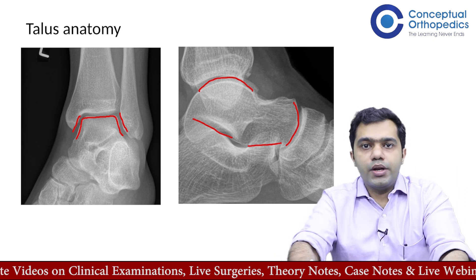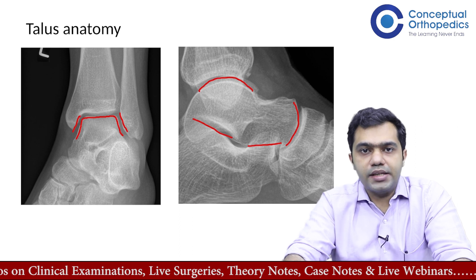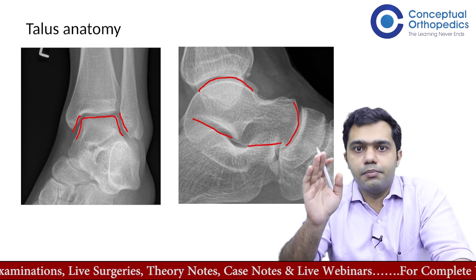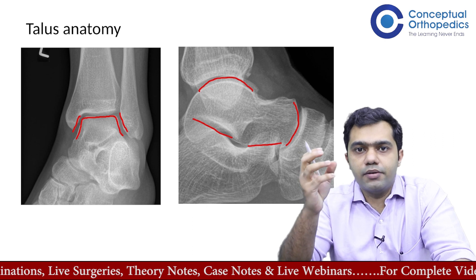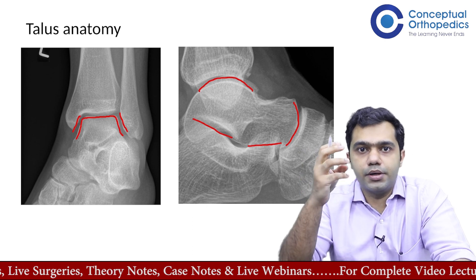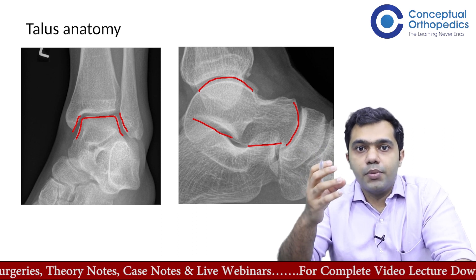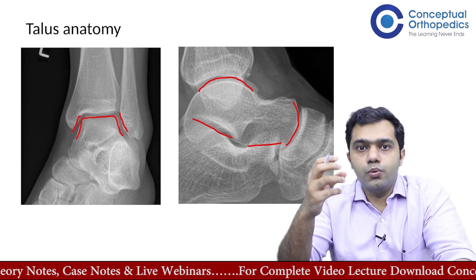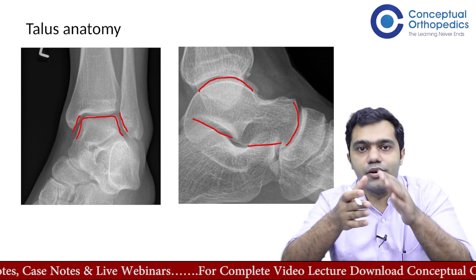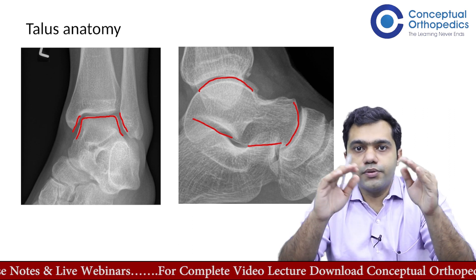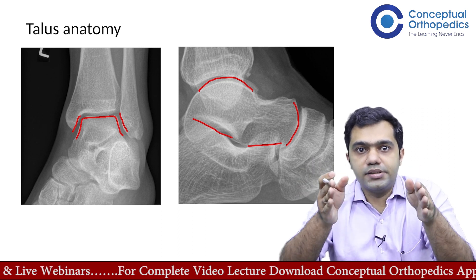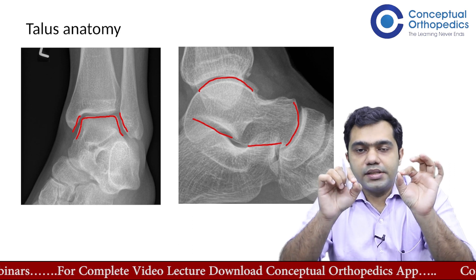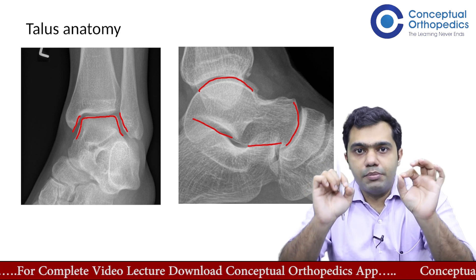When dealing with fractures, surgeons have to take care not to strip any muscle so that blood vessels are not compromised to that particular fracture's healing. But in the case of the talus, there are no muscles attached directly onto it, because most of the bone has articular cartilage covering it. The bone exposed to blood vessels is very minimal.